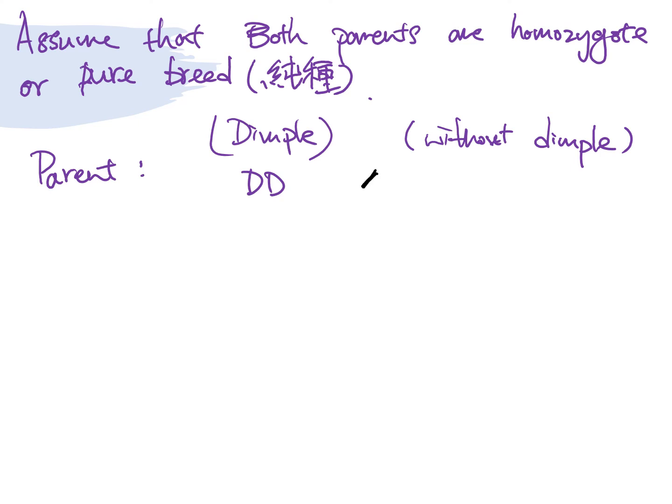And then after that, you have to put a cross in the middle, because they reproduce with another parent without dimples. So if a parent is homozygous without dimples, you should get small d small d. And afterwards, you have to write me the gamete that they formed.